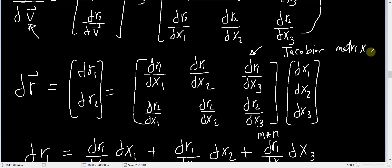We will talk about the Jacobian matrix again later when discussing the determinant of the Jacobian, linear transformations, and their relation to double and triple integrations. This matrix has more meaning than just being a table for derivatives. Note that some books define the Jacobian as the transpose of this matrix, but we will stick with this representation.